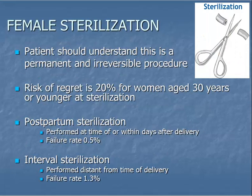Sterilization is a permanent method of contraception that should not be considered by couples unless they are absolutely sure they have completed any desired childbearing. Patients should be counseled that sterilization is permanent. Regret after sterilization occurs in all age groups, but is especially high — up to 20% — for women who undergo sterilization under the age of 30 years.